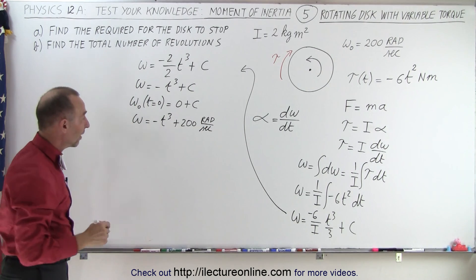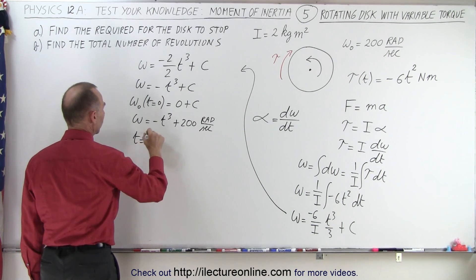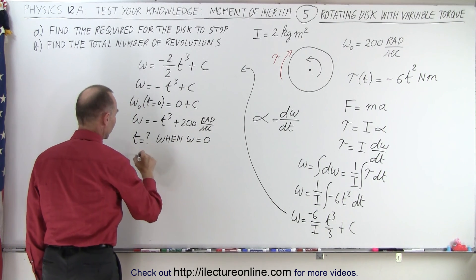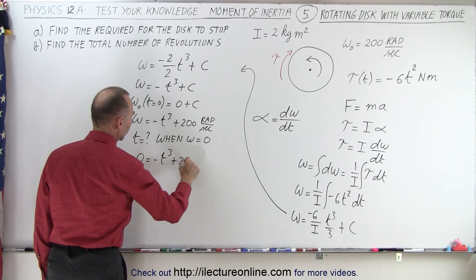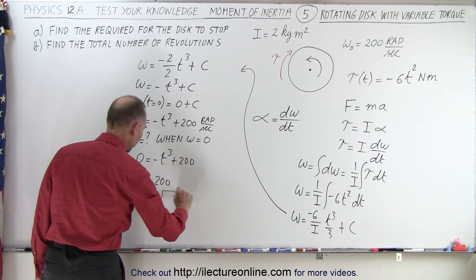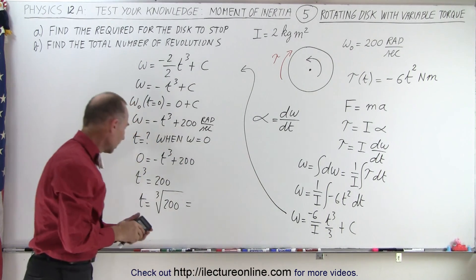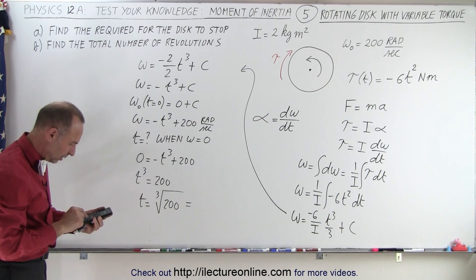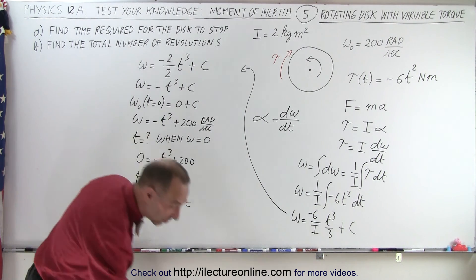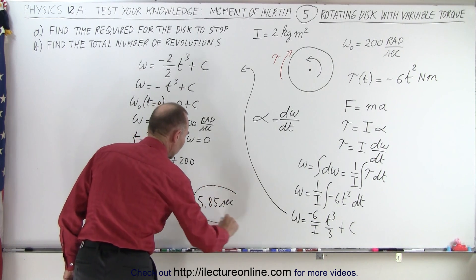We can now find the time when omega equals zero. Setting 0 equals minus t cubed plus 200, we get t cubed equals 200, so t equals the cube root of 200. Taking 200 to the one-third power gives 5.85 seconds. So it takes 5.85 seconds for the disk to come to a complete stop.